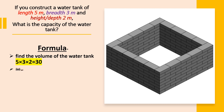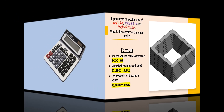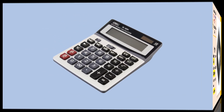Since the measurement is done in meters, we multiply the volume by 1000. So 30 into 1000 gives 30,000. This means the water tank shall contain 30,000 liters.